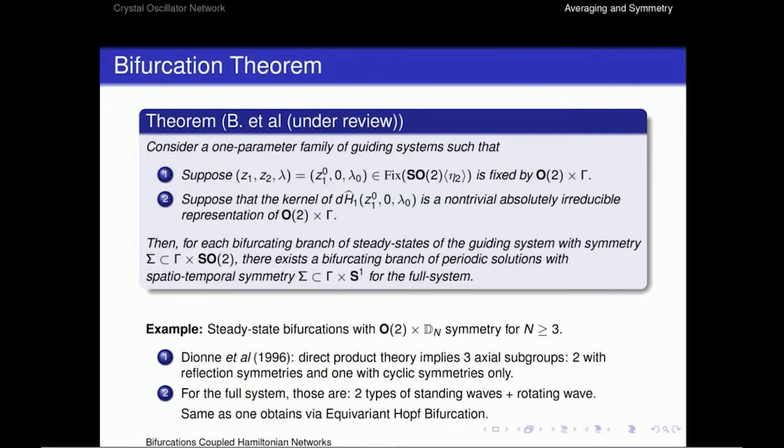And so then we can use that correspondence between the equilibrium of the average system with the full system to write this bifurcation result, which is sort of equivalent to the equivariant branching, the equivariant Hopf's theorem. So if we have a one-parametric family of guiding systems with some equilibrium solution in fixed SO2 and fixed by O2 cross gamma, and if the kernel of this linearization is a non-trivial absolutely reducible representation of O2 cross gamma, then for each bifurcating branch of steady-state of the guiding system with some symmetry sigma, there's a corresponding bifurcating branch of periodic solutions with spatial-temporal symmetry sigma for the full system.